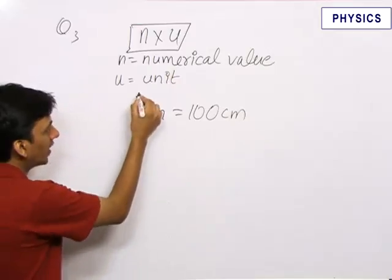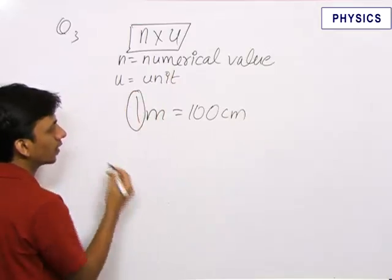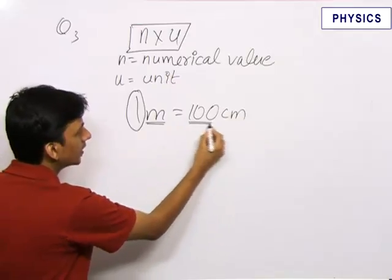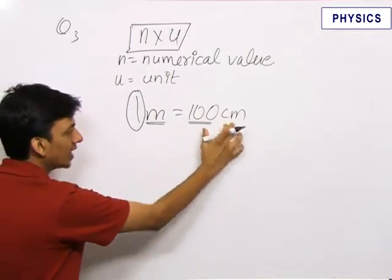Now, here 1 is the numerical value, meter is the unit, again here 100 is the numerical value and centimeter is the unit.